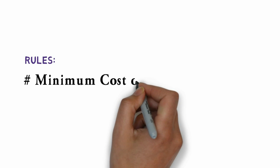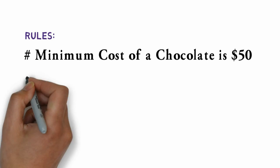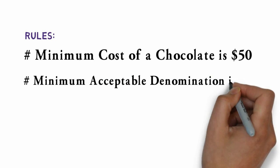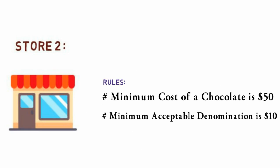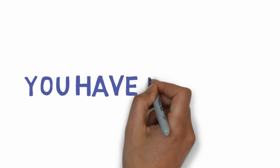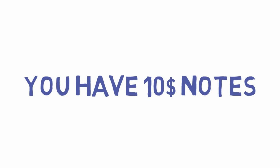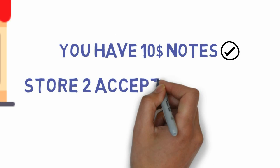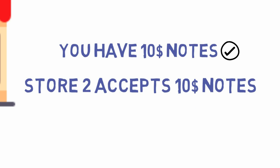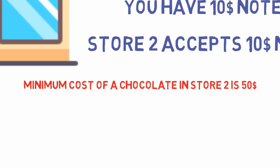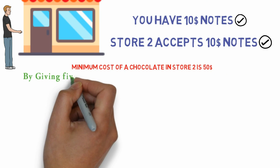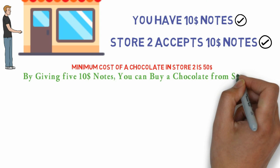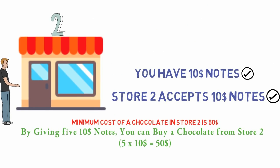The rules of Store 2 are: the minimum cost of a chocolate is $50, and $10 notes are accepted in Store 2. Even though you don't have $50 notes, you have $10 notes, so by giving these $10 notes you can buy a chocolate from Store 2.